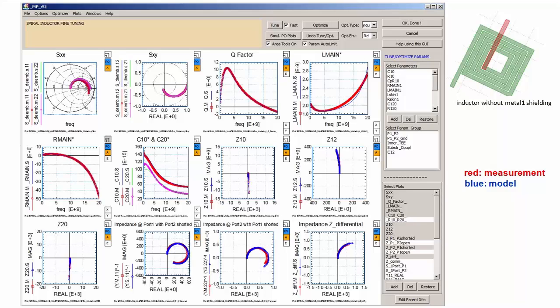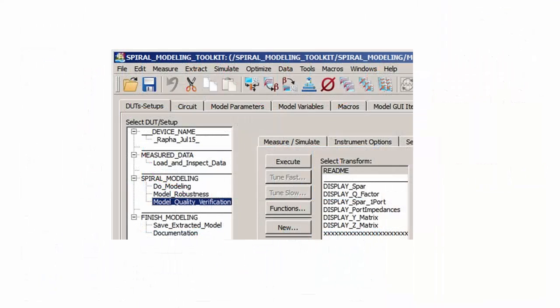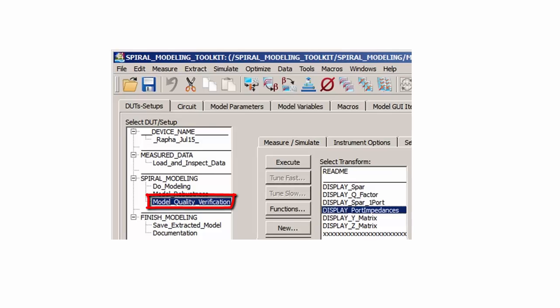The final result after optimization of all model parameters is shown here. The measurements are in red while the simulation results are in blue. We see the S-parameter fit, the Q-factor and the components of the SPICE-PI schematic. As a best practice, I want to verify now the model behavior for all types of port terminations. This is especially important for verifying an inductor model because it will not be used only in a 50 ohm environment.